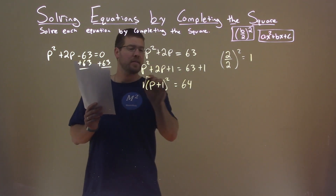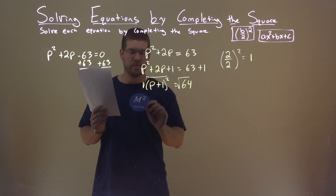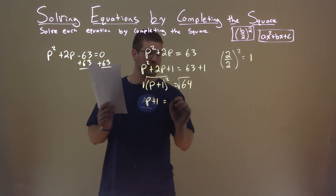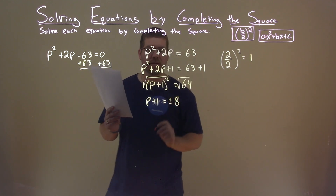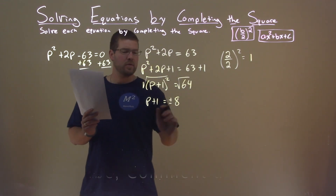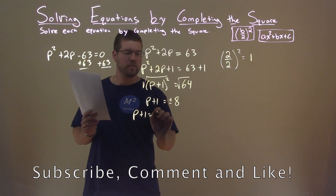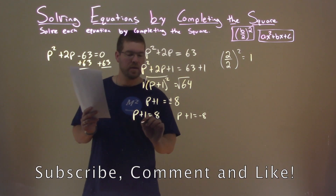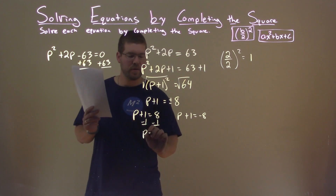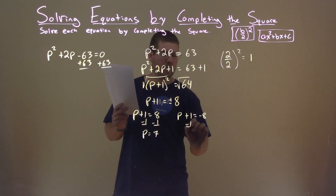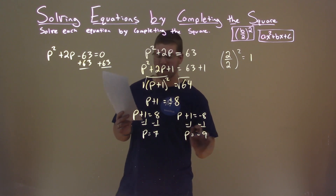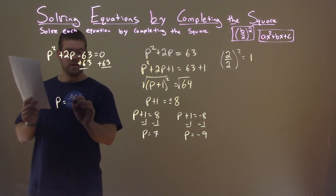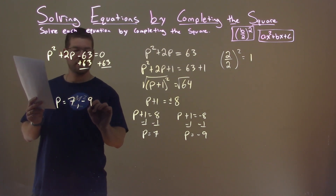We're now going to take the square root of both sides of the equation. That gives p plus 1 equals plus or minus 8. Breaking this into two equations: p plus 1 equals positive 8, and p plus 1 equals negative 8. Subtracting 1 from both sides: p equals 7. Subtracting 1 again: p equals negative 9. Our two solutions are p equals 7 and negative 9.